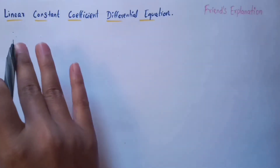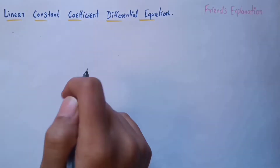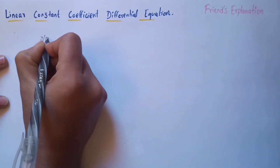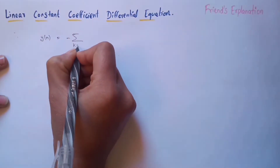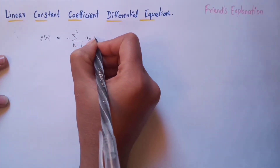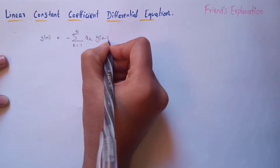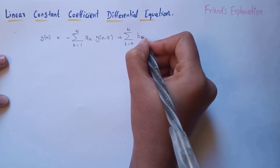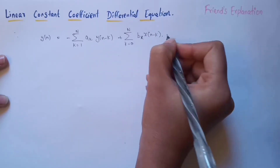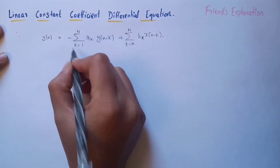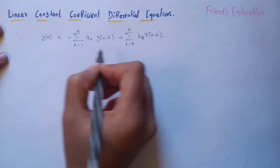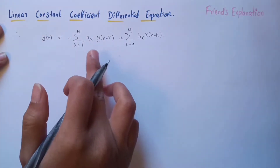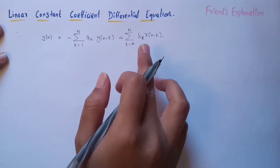Today we are going to discuss linear constant coefficient differential equations. This equation looks like y(n) equals minus summation from k equal to one to N of a_k times y(n-k), plus a summation from zero to N of a constant times x(n-k). Here the first part is the past output, and the second part is the present and past input, which gives the present output.